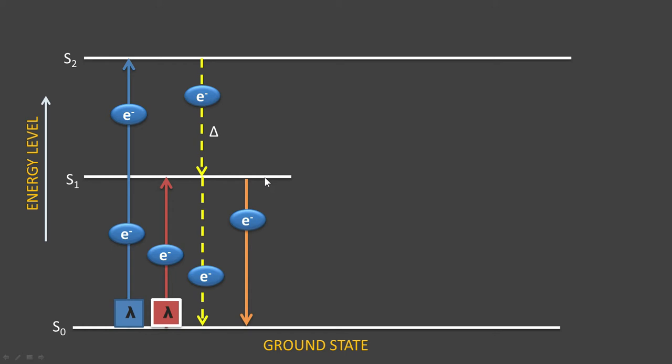From S1, when the electron comes back to the ground state, it releases its energy in the form of light, which is known as fluorescence. Or it may emit some amount of heat and stay in a more stable state, which